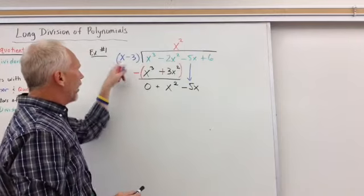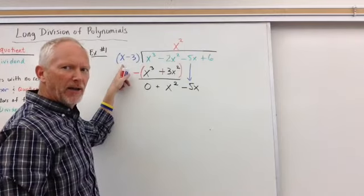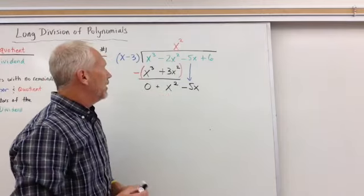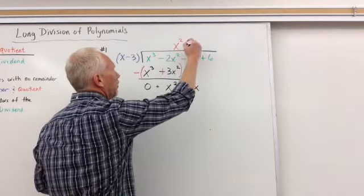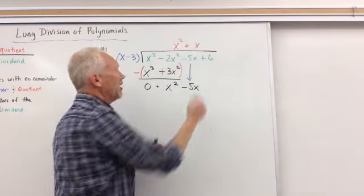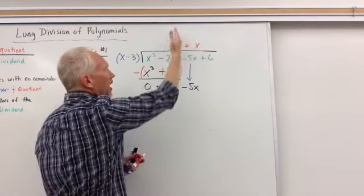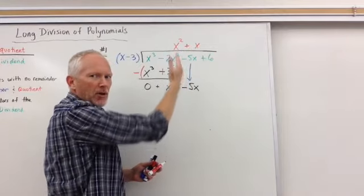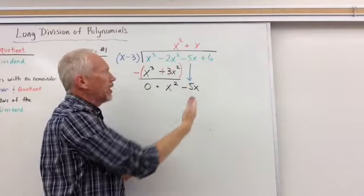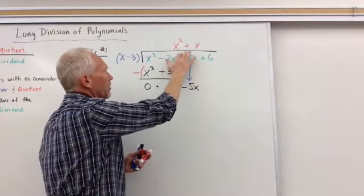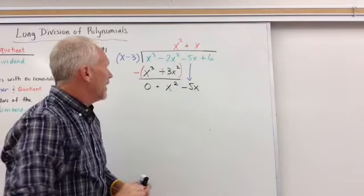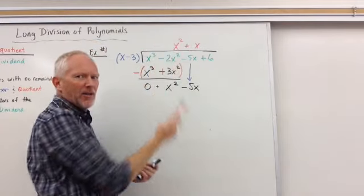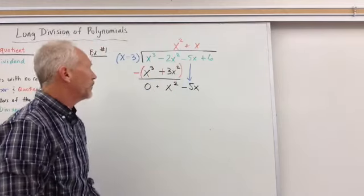So I look and go, what do I need to multiply x by in order to create an x squared? Well, I've got to multiply it by an x. So plus x. Now you notice how I'm lining these up in these columns. I'm trying to keep this all very neat and orderly so that when I go back and review, I know that there was an x squared plus an x. I don't want to list it over here near the x cubed term because that's not what we're doing. We're doing an x squared.